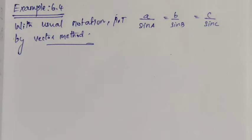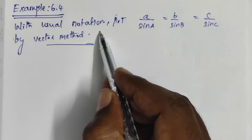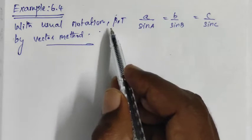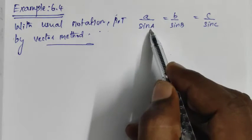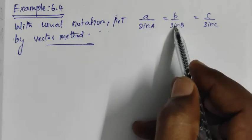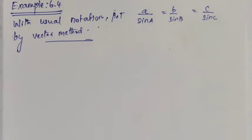Friends, this is example 6.4. With the usual notation, in any triangle ABC, prove that a/sin A = b/sin B = c/sin C.